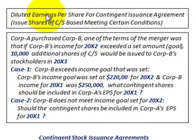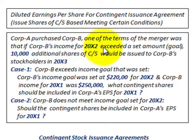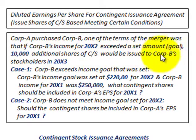What we're going to be going over here is diluted earnings per share for contingent issuance agreements — this is where you issue shares of common stock based on meeting certain conditions or goals. In our example, Corporation A purchased Corporation B, and one of the merger terms was that if Corporation B's income for year 20x2 exceeded a set goal amount, 10,000 additional shares of common stock would be issued to Corporation B's stockholders in year 20x3.